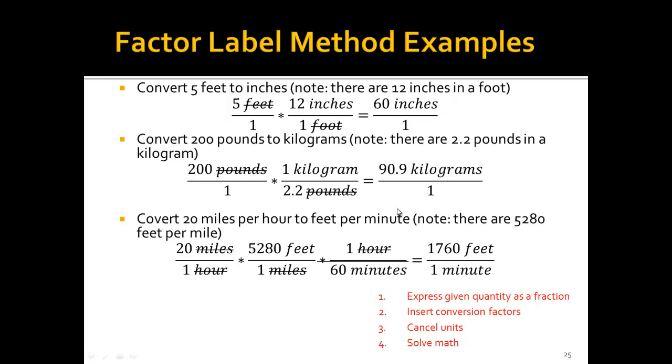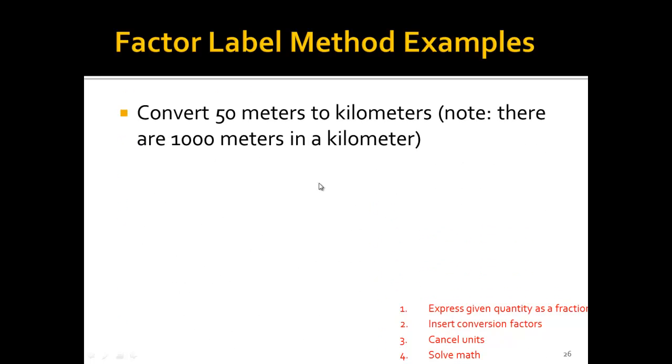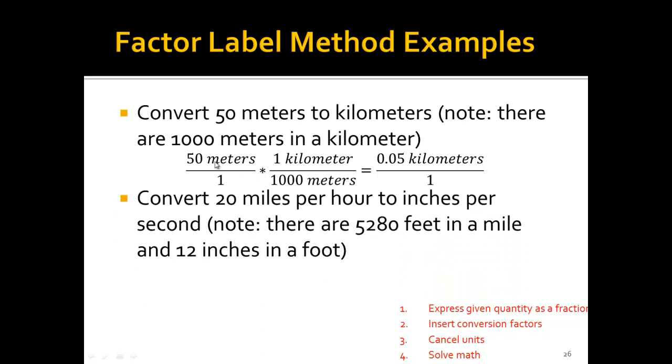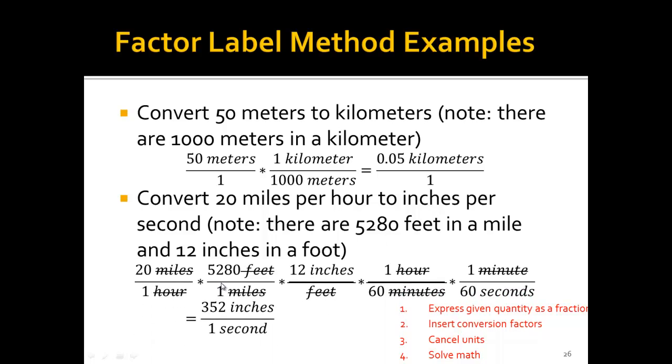So let's keep going. Let's try another one. So 50 meters to kilometers. We know a kilo is 1,000, so that means there's 1,000 meters in a kilometer. Same thing. The only thing I forgot to do here was cross out the meters, and I really want to stress that. And then 20 miles per hour to inches per second. We do the same thing with feet, but then we insert another unit conversion to go from feet to inches, and then the same thing with hour and minutes, but then we need minutes to seconds. So this is how you solve these types of unit conversion problems.